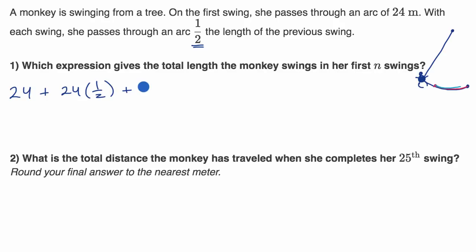Every successive swing, the arc length is half the arc length of the last swing, so it's going to be 24 times 1 half. And then on the next swing, it's going to be 24, it's going to be half of this. So it's going to be 24 times 1 half times 1 half. So that's 24 times 1 half to the second power.